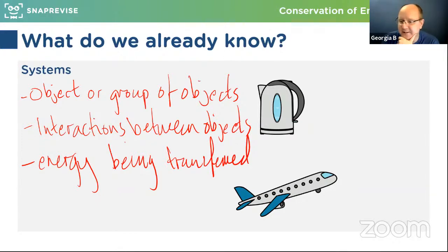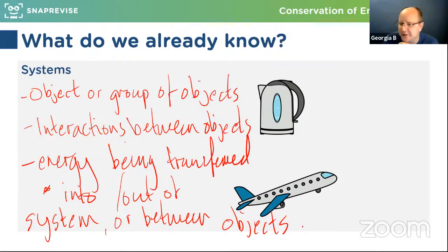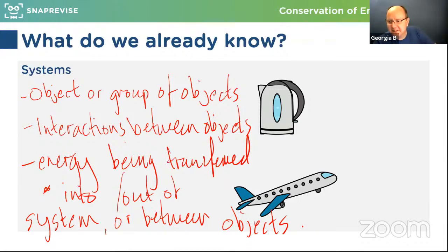Brilliant — thank you D, thank you Amy. Yes, energy is being transferred, and that could be into or out of the system, or between objects within the system. So if we just think about the two examples on the screen: the kettle first of all — what's the energy input to the kettle? How are we transferring energy into the system that is the kettle?